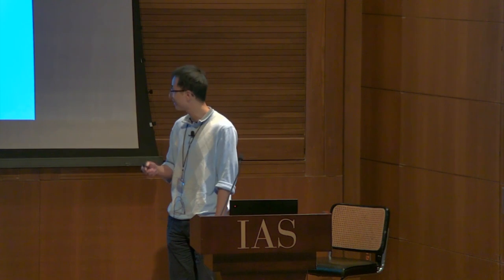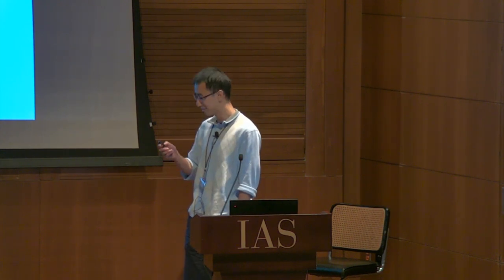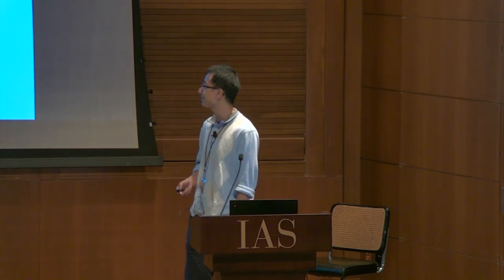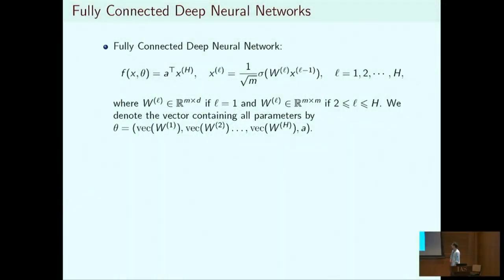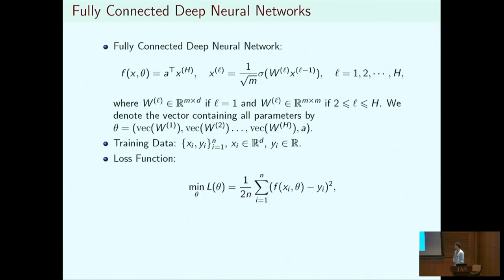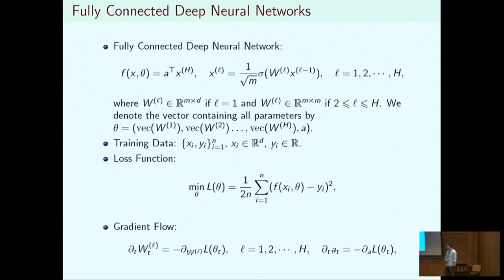At the Neural Tangent Hierarchy — this is a joint work with HTL. Let me quickly guide you through the setting we use. We started with fully connected deep neural networks. It has h hidden layers, all intermediate layers have width m, and we use the NTK parameterization. We have n training data points and we use the square loss function. For simplicity, we only study the gradient flow.